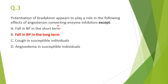Third question: potentiation of bradykinin plays a role in the following effects of ACE inhibitor except — the correct answer is fall in BP in the long term. Bradykinin breakdown is prevented by ACE inhibitor; bradykinin is a potent vasodilator causing fall in BP short-term, and is responsible for cough and angioedema. In the long term, however, bradykinin does not play a significant role because apart from kininase 2, it is also degraded by kininase 1, which is not inhibited by ACE inhibitor.